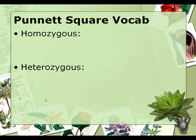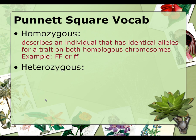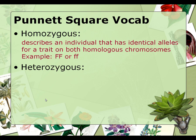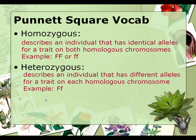When we're talking about homozygous, we're talking about an individual or a cell that has two identical alleles. When using the term homozygous, be sure to clarify whether it's homozygous dominant or homozygous recessive. Heterozygous is when the cell or the individual has two different alleles for one particular trait.